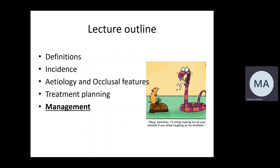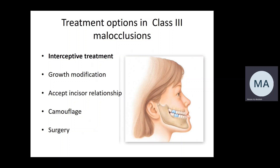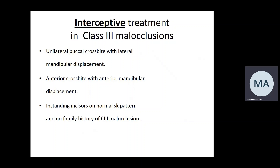This lecture, we're going to talk about the management of this malocclusion. As we said last time, we have main categories and treatment options: starting with interceptive treatment, growth modification, accepting the incisor's relationship with no treatment or with minimal aims of treatment, camouflage, and surgery.